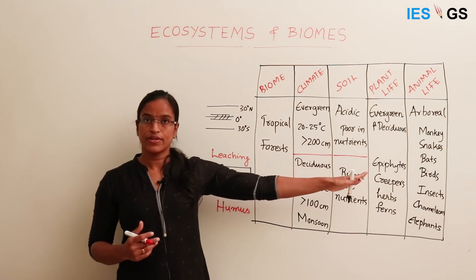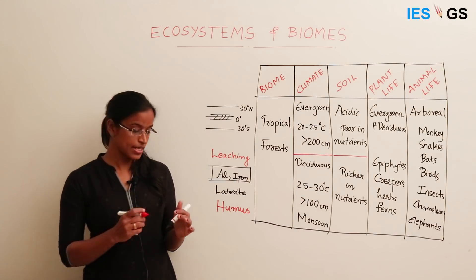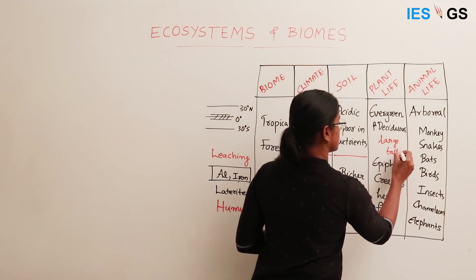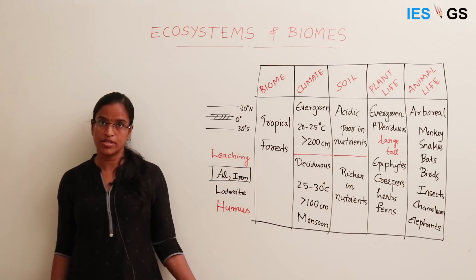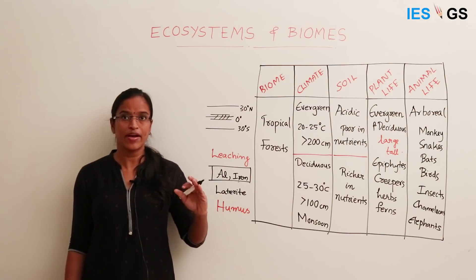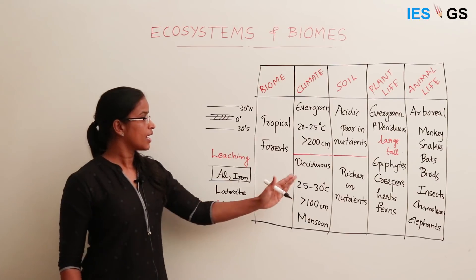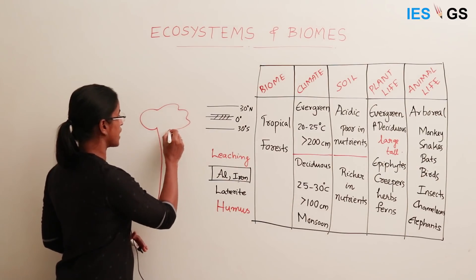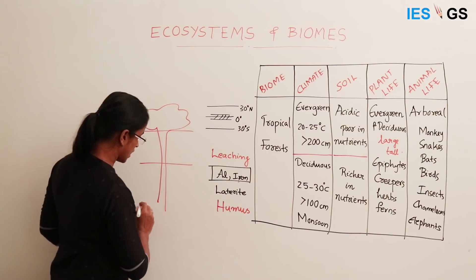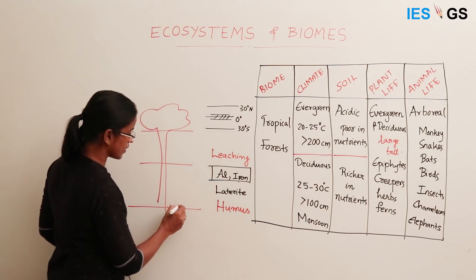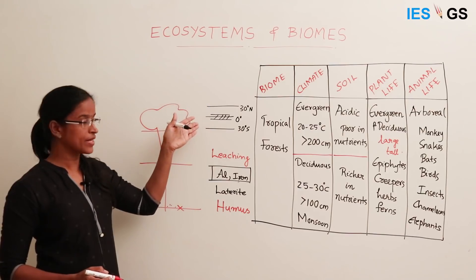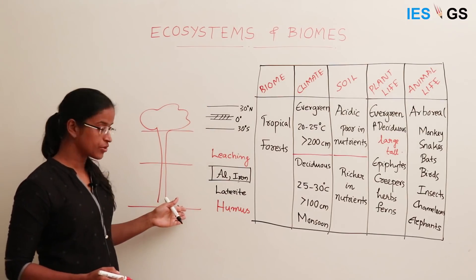The plants here will be mainly large and tall trees, because enough moisture and sunlight are available in this region. Very high biomass is available in these trees. They grow in different vertical layers in the forest — the upper canopy, middle canopy, and the under layer. This under layer will be mostly devoid of vegetation because sunlight can rarely penetrate through the thick canopy to the ground layer.